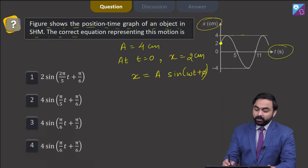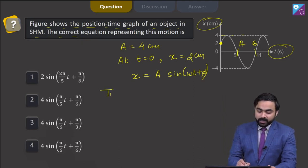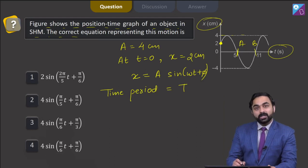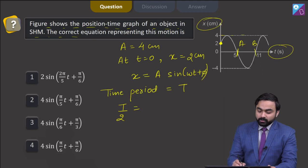Now students if we look at this particular graph, then from A to B it is half oscillation, and if time period of this SHM is capital T, then time period of half oscillation will be T by 2, which is equal to 11 seconds minus 5 seconds. Therefore, T is equal to 12 seconds.